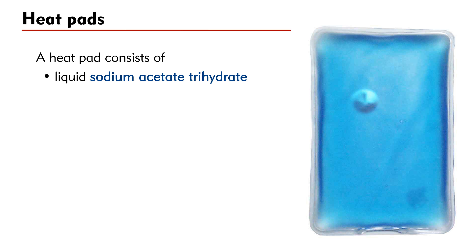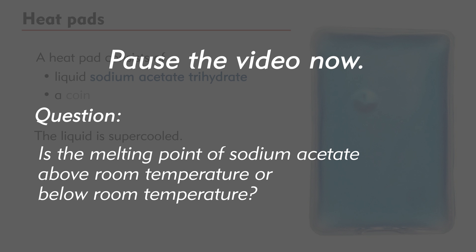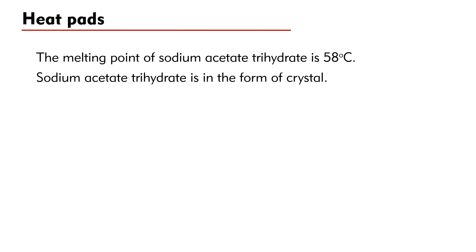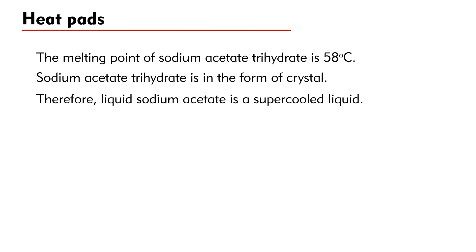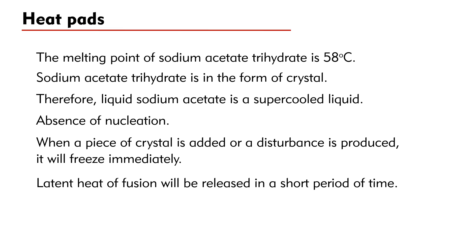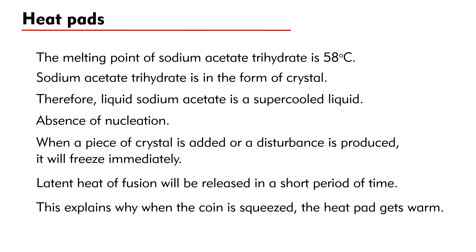In fact, supercooled liquid is used in heat pads. A heat pad consists of liquid sodium acetate trihydrate and a coin inside a plastic bag — the liquid is supercooled. The melting point of sodium acetate trihydrate is 58 degrees Celsius. Normally, sodium acetate trihydrate is in the form of solid crystal; therefore, liquid sodium acetate is a supercooled liquid. This is explained by the absence of nucleation during the cooling. When a piece of crystal is added to the supercooled liquid or a disturbance is produced, it will freeze immediately. According to the cooling curve, latent heat of fusion will be released in a short period of time. This explains why when the coin is squeezed, the heat pad will get warm.